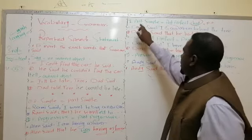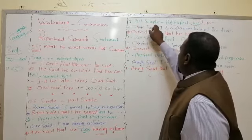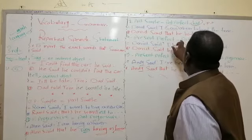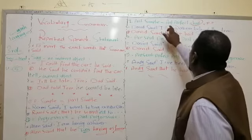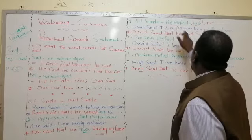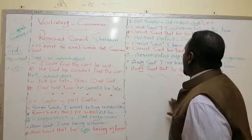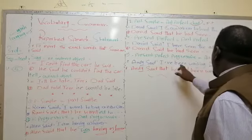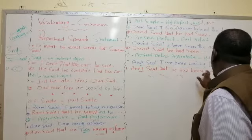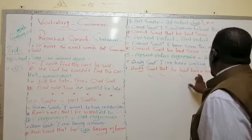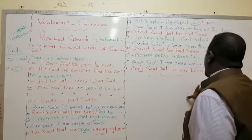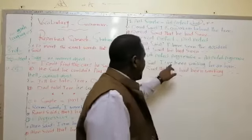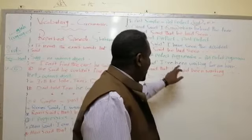In past simple and present perfect, the reported speech sentence can be changed to past perfect. But in present perfect progressive — 'have been' plus verb plus '-ing' — we change only 'have' to 'had'. The structure becomes 'had been' plus verb plus '-ing'. So the only change is from 'have' to 'had'.